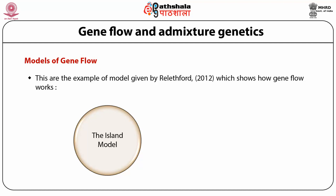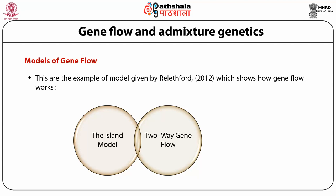Another model is two-way gene flow. The island model focuses on gene flow in one direction and allele frequency does not change in the source population, that is the mainland, or in terms of population genetics, the metapopulation. Although this model fits some cases, a model that allows gene flow in two directions is more applicable to many situations. In short, where the island model is only one-directional exchange of genes, the two-way gene flow is bidirectional in nature.